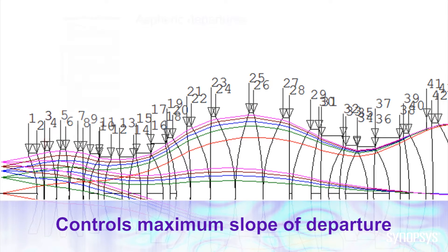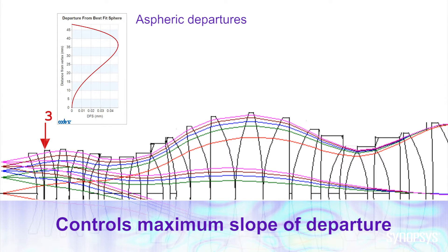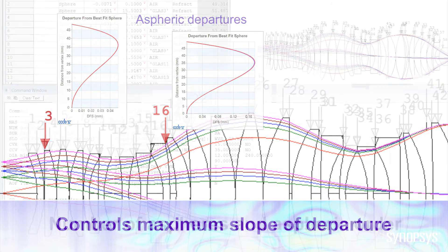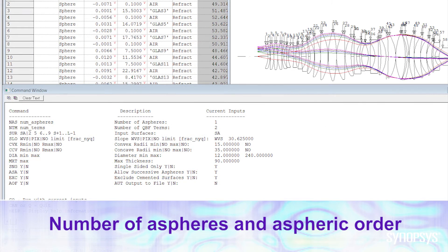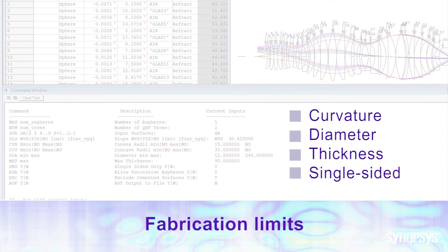You have the ability to control slope departures of the asphere from the base surface, and you also have the ability to limit where aspheres can go. So you'll be basically prompted for most of the inputs related to specifying limits on different constraints.